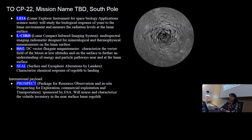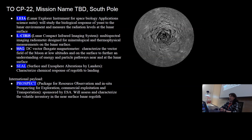The last delivery is CP22, which I had the pleasure of working with these payload teams on for landing site selection just last week. PROSPECT, sponsored by ESA, is on this lander. Also the PRISM instrument suite, LEA — which will study the biological response of yeast to the lunar environment and measure radiation levels — an imaging radiometer making measurements of mineralogical and thermophysical properties, a flux magnetometer characterizing the vector magnetic field both at low latitudes and on the surface, and SEAL, characterizing the chemical response of the regolith to the lander's landing. I invite you to reach out to me with any questions about the science that CLPS is doing.